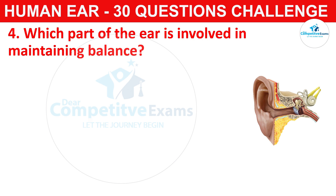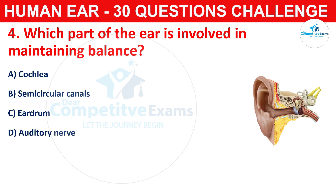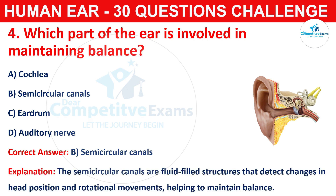Question four: which part of the ear is involved in maintaining balance? Your options are cochlea, semicircular canals, eardrum, or auditory nerve. The correct answer is B, that is the semicircular canals. The semicircular canals are fluid-filled structures that detect changes in head position and rotational movements, helping to maintain balance.